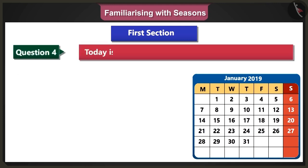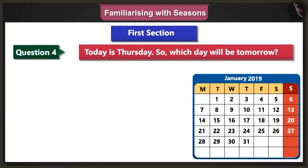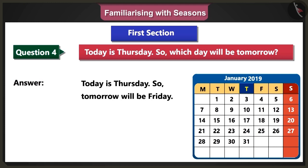Fourth question: Today is Thursday. So tomorrow will be which day of the week? Answer: Today is Thursday, so tomorrow will be Friday.